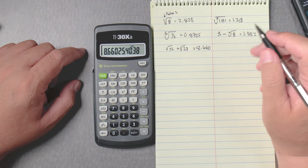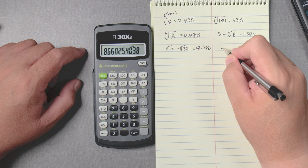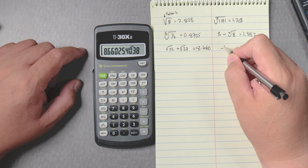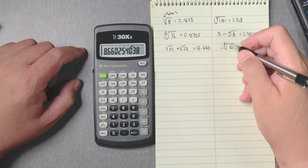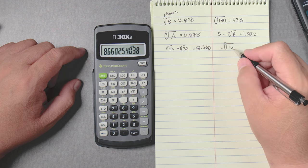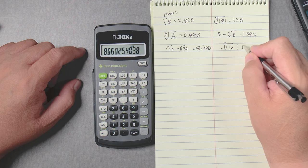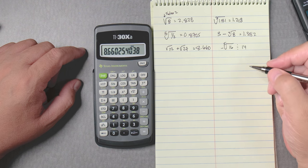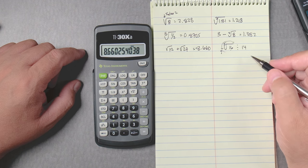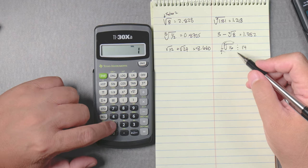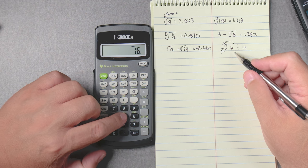How about something like negative, the fifth root of 16, the fifth root of 16 divided by 14. We know that the answer here will be negative so what we can do is we'll put the 16 first then second y to the x to the fifth root.